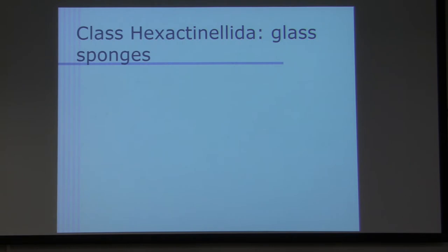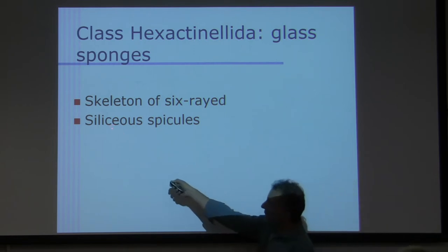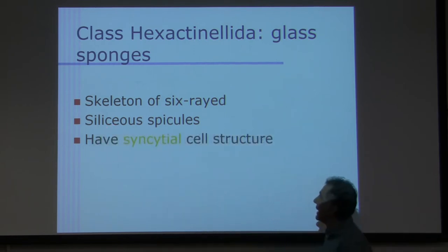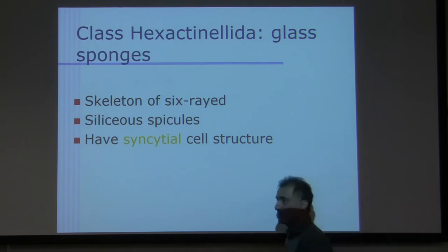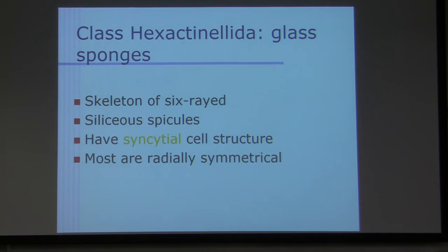The next class is class Hexactinellida, which was in the video. You guys asked me what class. This is the class. Hexa means what? Six. Pretty good. Penta means five, hexa means six. You guys know this from your past life. They're glass sponges, skeletons of six rays. Siliceous spicules made up of silicon. Siliceous means silicon. And then they have syncytial cell structure. Remember that? I said it today. Syncytial means one cell with multi nuclei in there. So it is possible for them, and most are radially symmetrical.